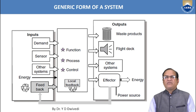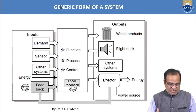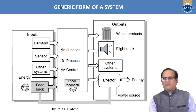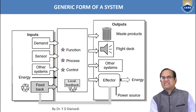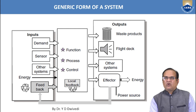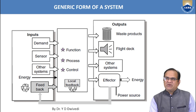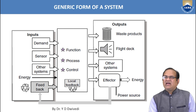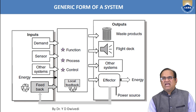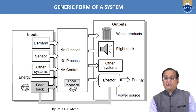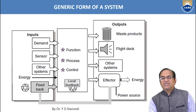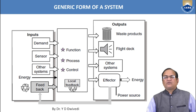In the generic form: input includes demand, sensor, other systems, energy, and feedback from the output. These go to the function process control, which also has a local feedback loop. The output is waste product, flight deck instruments, other systems like hydraulic, pneumatic, electrical, and avionics systems, then the effector and energy. If the output is not as required, feedback goes to local feedback and the process or input is changed to achieve the best possible output.